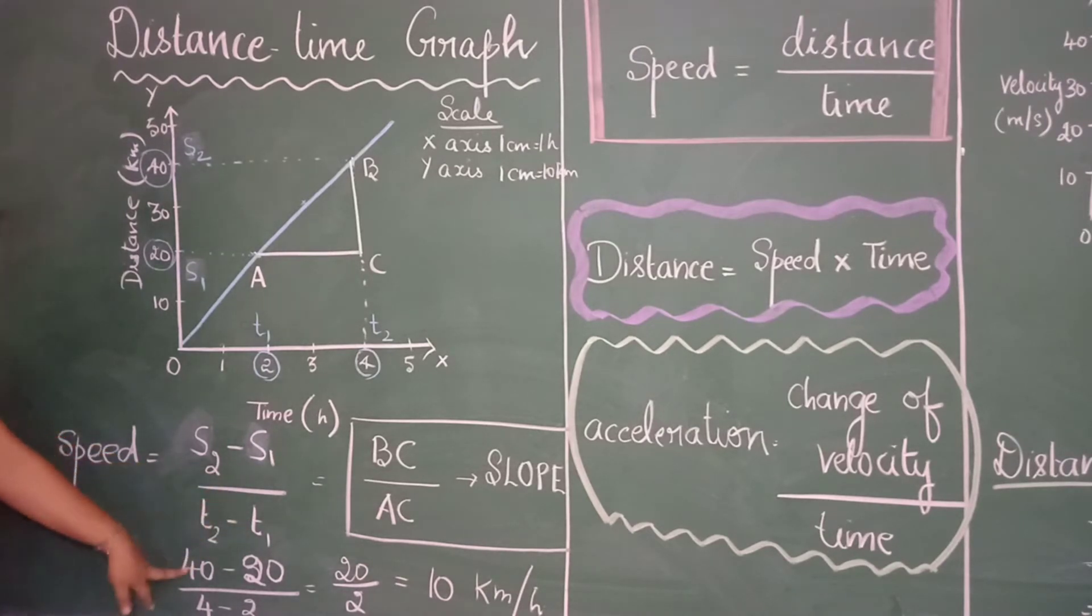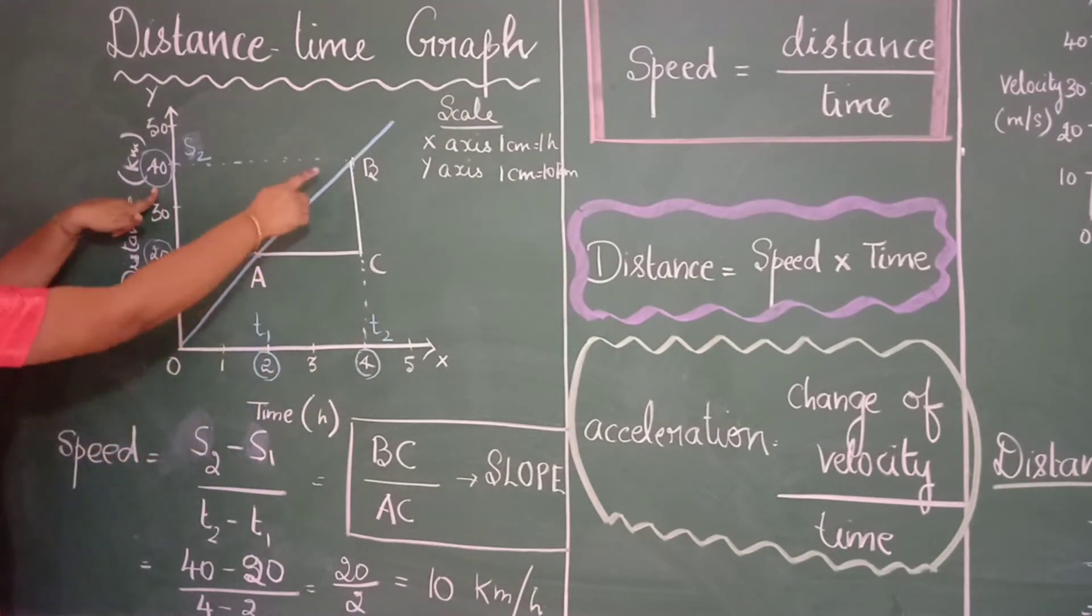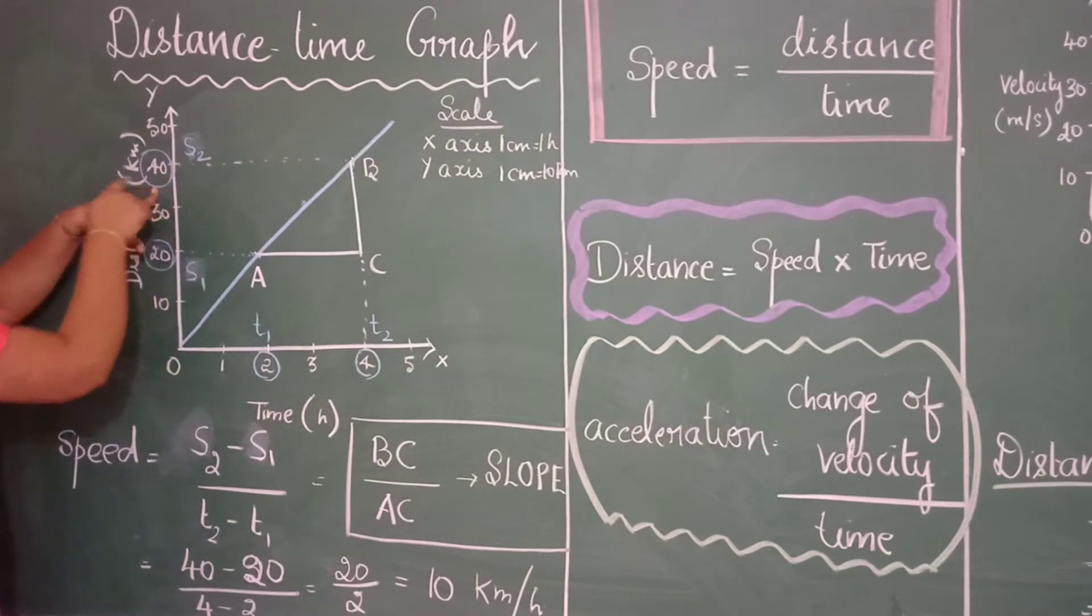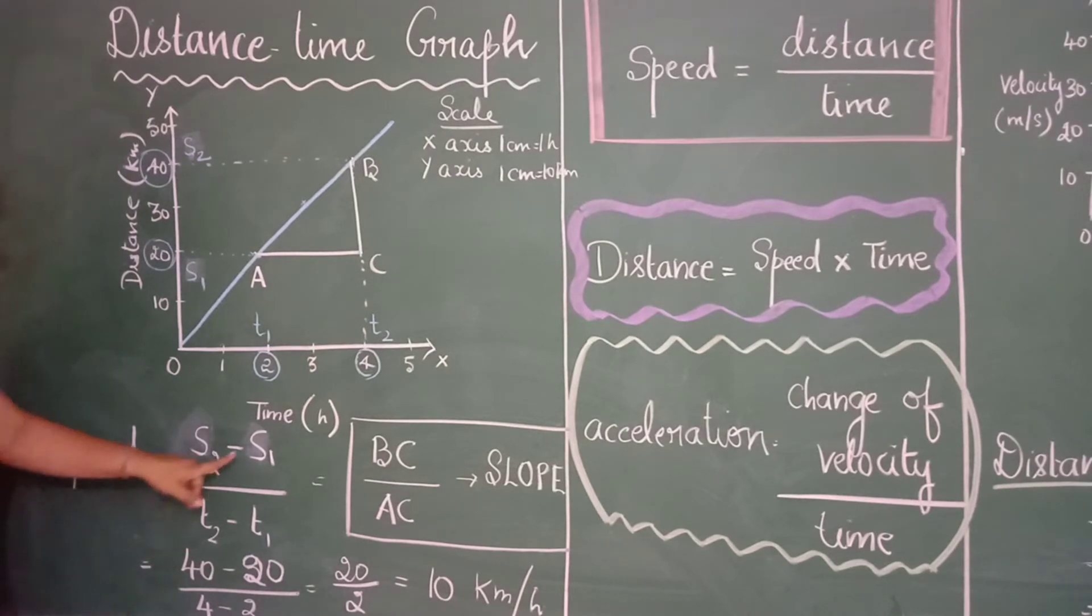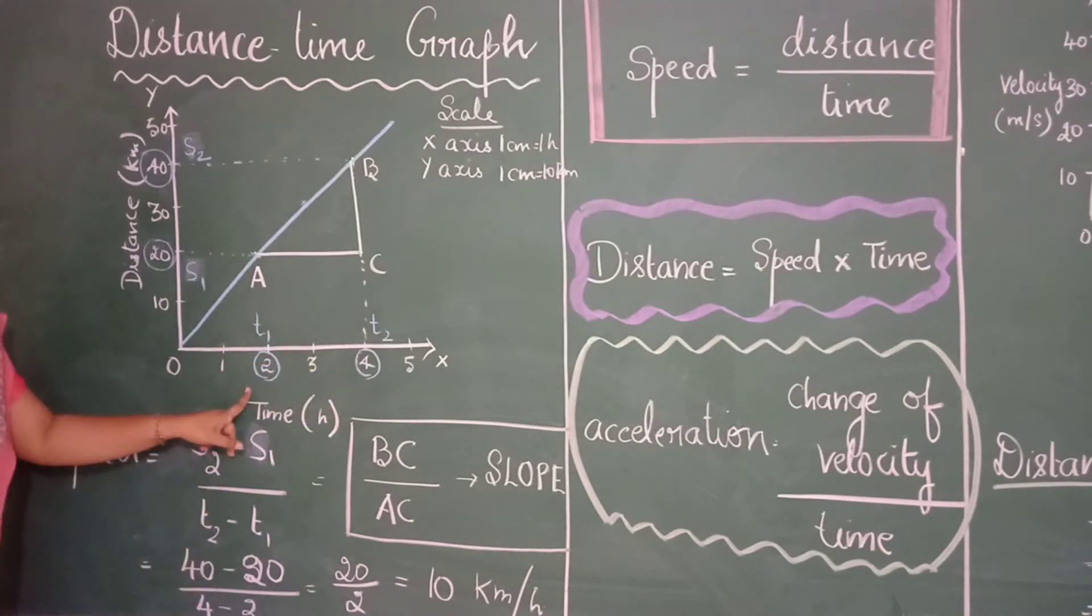If I just substitute the values you will see that s2 is equivalent to 40 km. You can use a ruler and check out the values and in case you are using a graph you can directly infer that it is 40 km. So s2 is 40, s1 is 20, t2 is 4 hours and t1 is 2 hours.